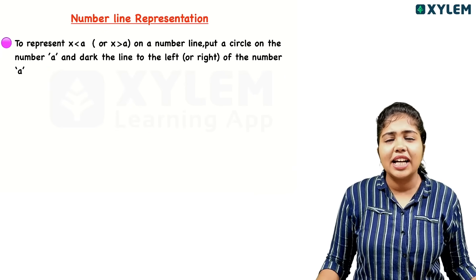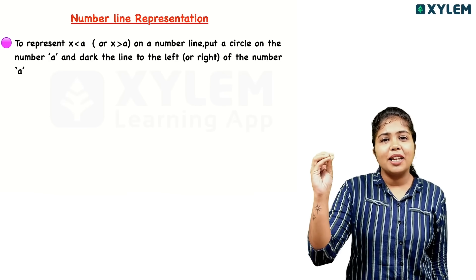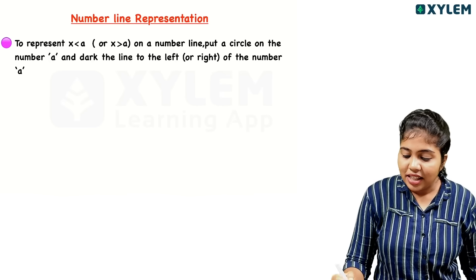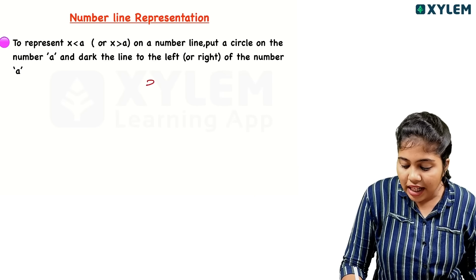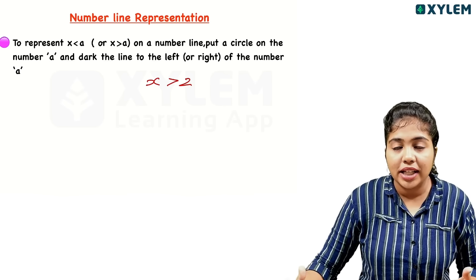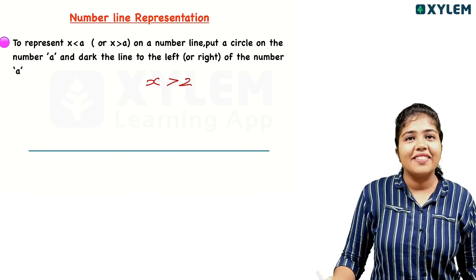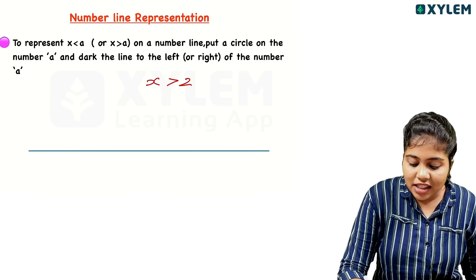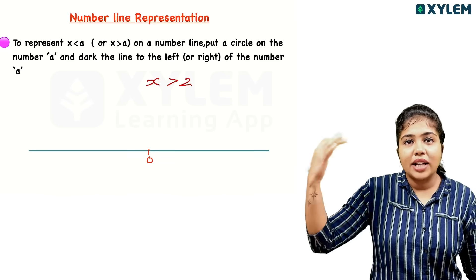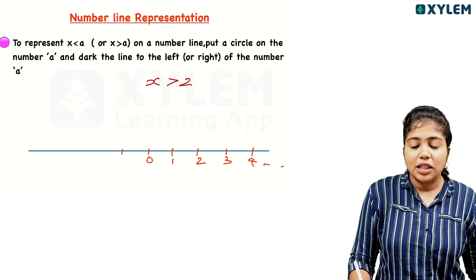Number line representation: in this chapter we have a graphical representation, not just number line representation. Simple representation — for example, for the solution x greater than 2, we draw a number line and mark all the points. 0, positive values: 1, 2, 3, 4 on the right.